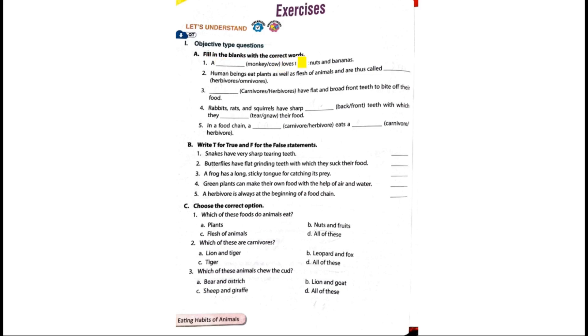Fill in the blank with the correct words. A dash loves to eat nuts and bananas. Monkey is the correct answer. Human beings eat plants as well as flesh of animals and are thus called omnivores.